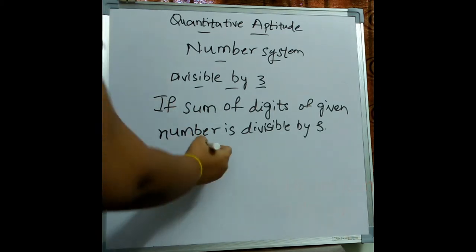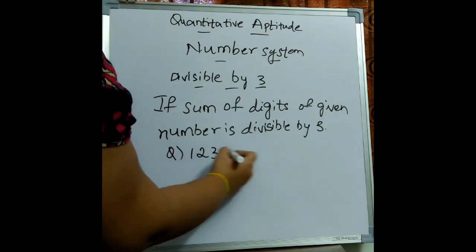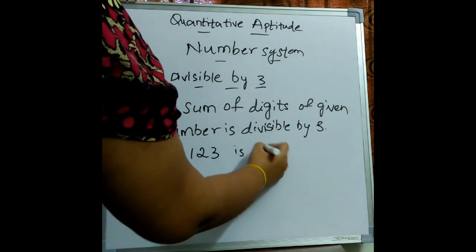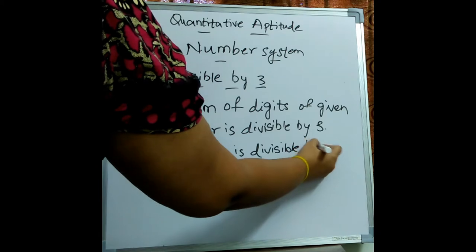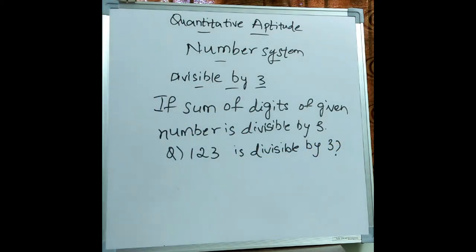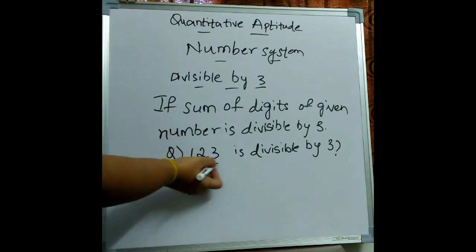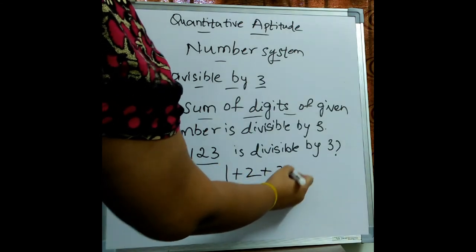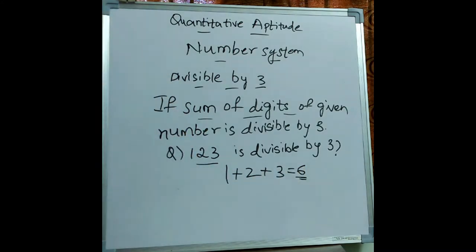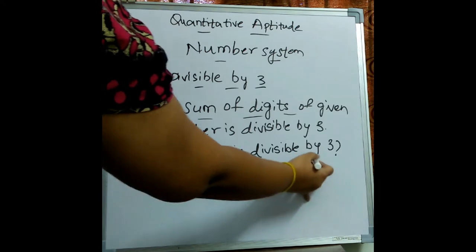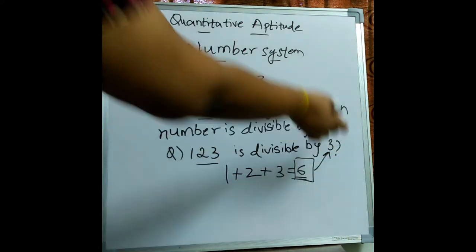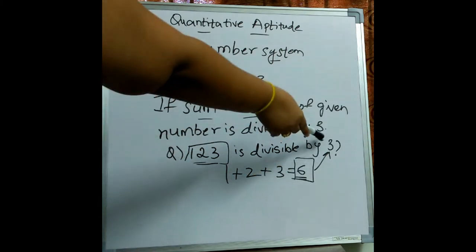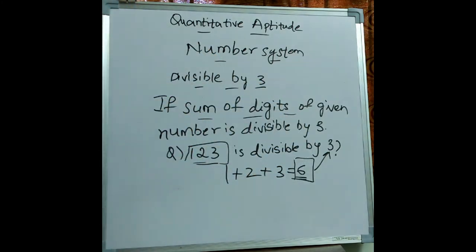For example, the question is: is 123 divisible by 3? We need to find the sum of the digits. 1 plus 2 plus 3 is 6. Now we need to see whether 6 is divisible by 3. 6 is divisible by 3, so as the sum of the digits is divisible by 3, the whole number is also divisible by 3.